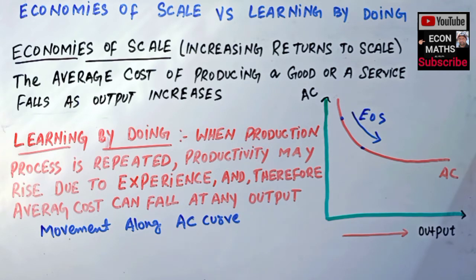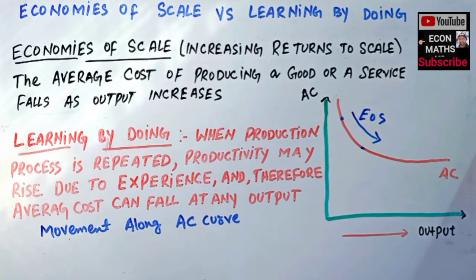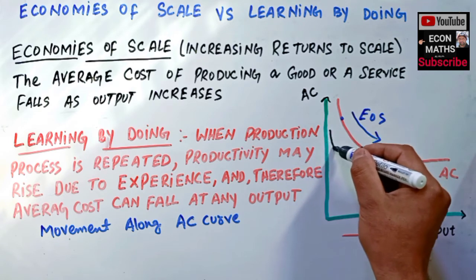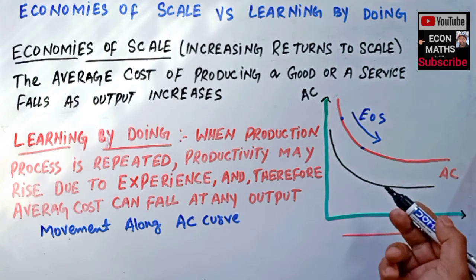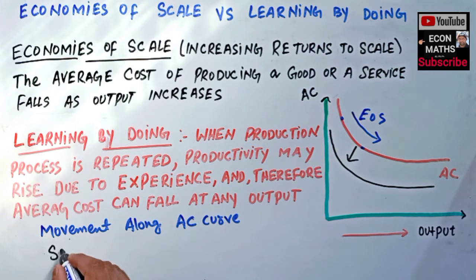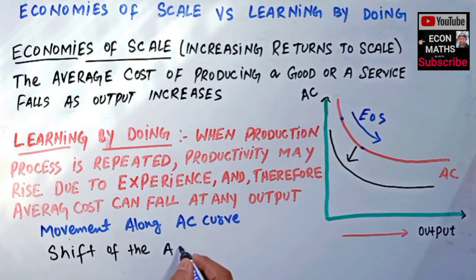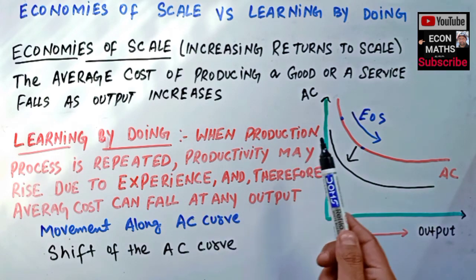On the graph, learning by doing is simply a shift of the average cost curve. If this is our original average cost curve, let me draw it with another color — this is our new average cost curve. So this new average cost curve reflects the learning by doing; it is simply a shift of the average cost curve.